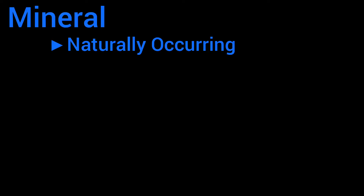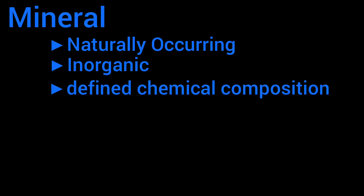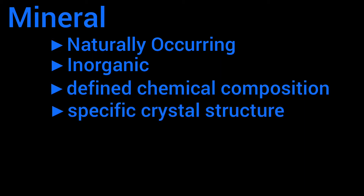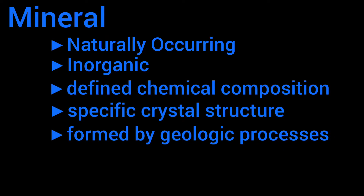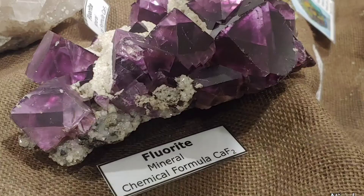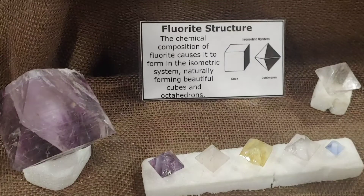In order to be a mineral, it has to be naturally occurring, inorganic, have a definitive chemical composition, a specific crystalline structure, and it must be formed by geologic processes. Fluorite is a mineral because it has the chemical formula CaF2, and it has a definitive crystalline structure.